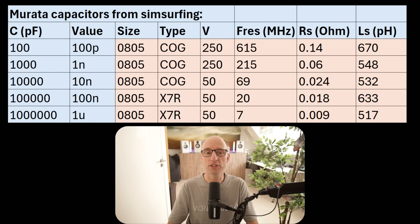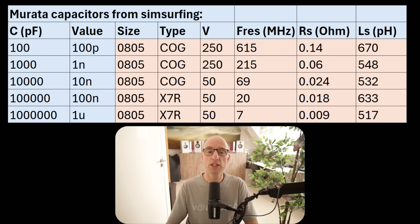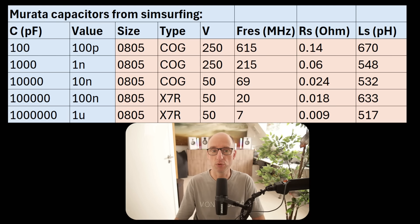What is crucial to notice is that the larger the capacitor value, the lower its resonance frequency, also called the self-resonance frequency or SRF in the datasheet. If you make capacitors physically smaller, like 0402, the resonance frequency will go up. If you make them physically bigger, like a 1206, the resonance frequency will go down.